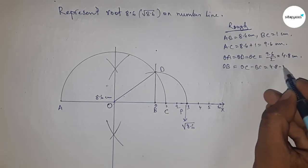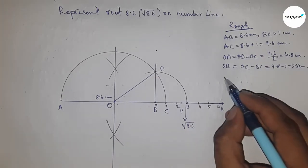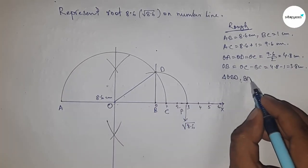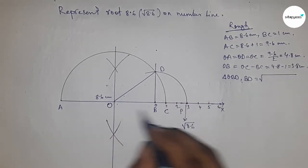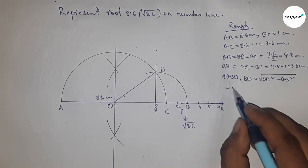From the right-angle triangle OBD, we can write BD equals, by Pythagoras theorem, OD squared minus OB squared. Putting the values of OD and OB.